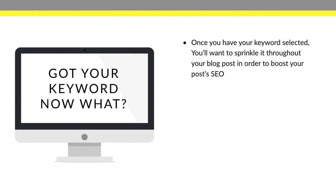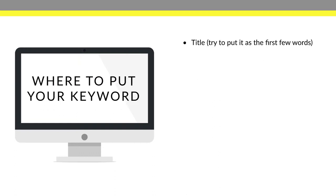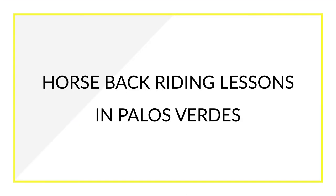Once you have your keyword, you'll want to sprinkle it throughout your blog post to boost your SEO. Let's talk about where exactly to put your keywords. Number one — put it in the title. Try to put the keyword towards the beginning of the title, since Google gives a little more weight to the beginning. For example, if I was targeting "horseback riding lessons," I'd title it "Horseback Riding Lessons in Palos Verdes" so the keyword appears at the start.